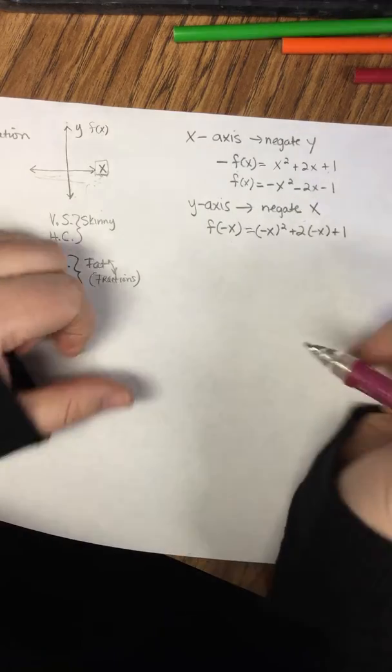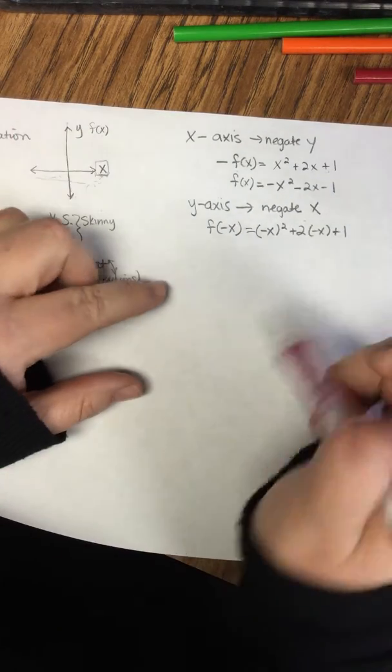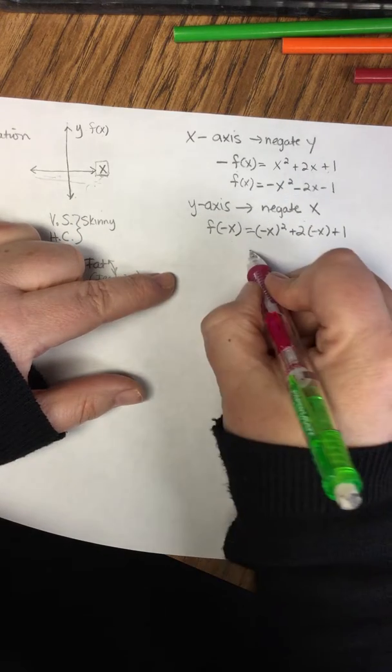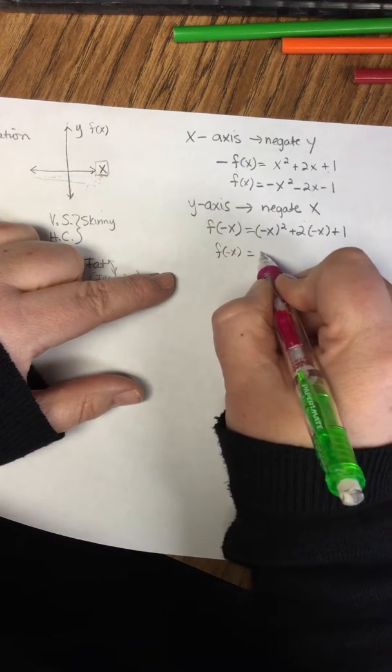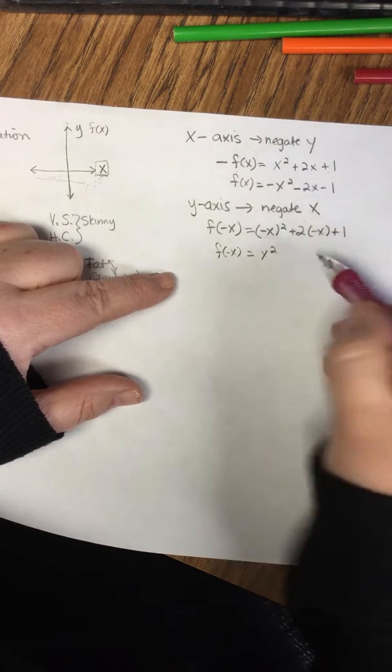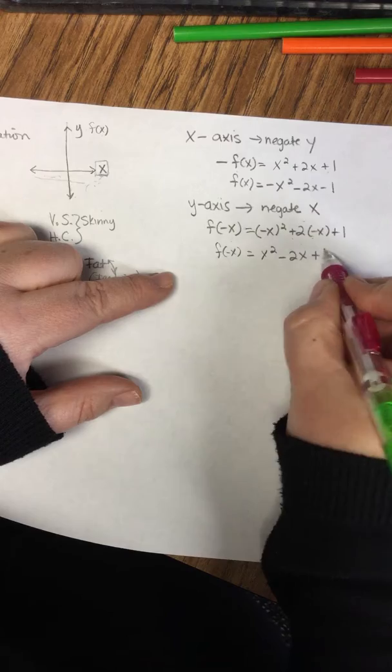All right, so here's where some of the confusion is happening. I just can't go through and negate like we did before. A negative times a negative creates a positive here, so this would be x². It doesn't change. From here, I have a negative and a positive makes -2x + 1.